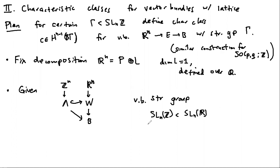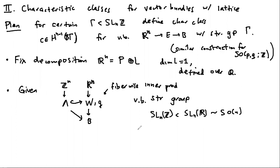If you have a bundle like this, you can extend the structure group to SL(n,R) and reduce it to the maximal compact subgroup SO(n), which amounts to choosing fiber-wise inner products on the bundle. From this setup I'm going to build a characteristic class. Roughly what the characteristic class is measuring is whether or not you can choose a reduction in a way compatible with the lattice structure.